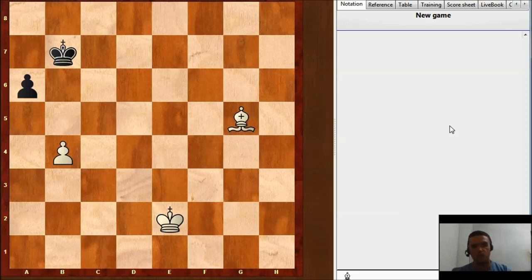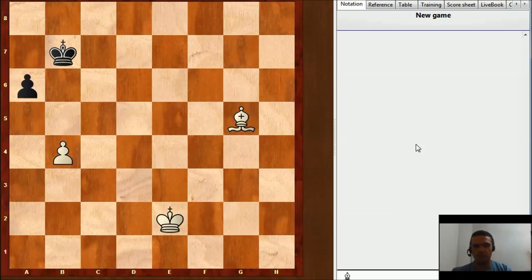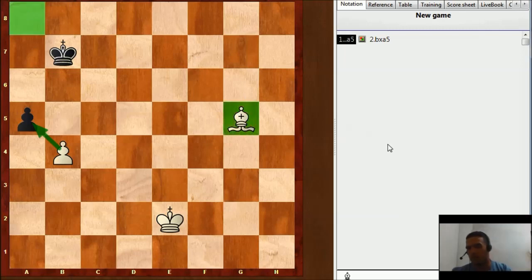Let's analyze this one, this is very interesting. It is black to move here, and black can get a draw in this position. Try to find the best move for black. A5, after pawn takes, the pawn promotes in different squares than the bishop.